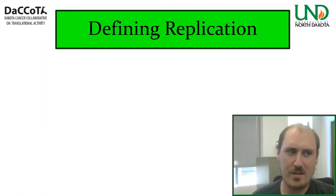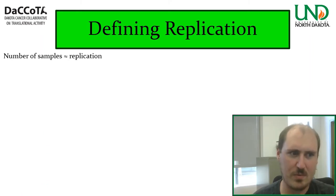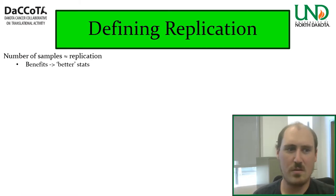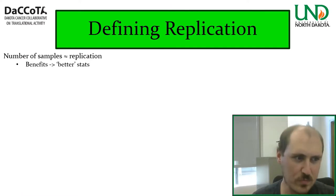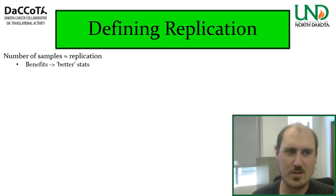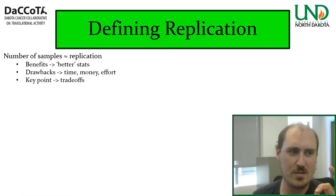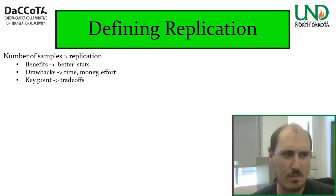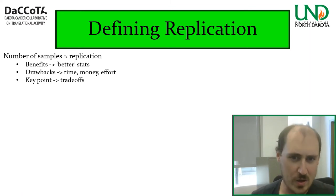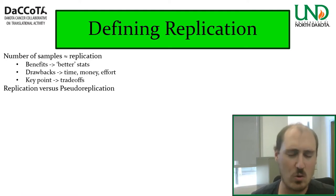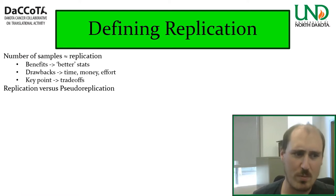Defining the experimental unit begins with defining what replication is for our study design. Our sample number is equivalent to the replication number. The more replicates, the stronger the inference and the more likely our sample represents the reality of the population we care about. We can't add replication indefinitely — the number of samples depends on time, money, and effort available. The key is to determine the number of samples that give us the best bang for our buck via trade-off between statistical inference and resource expenditure.